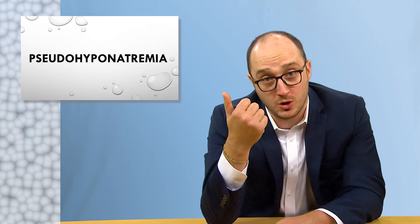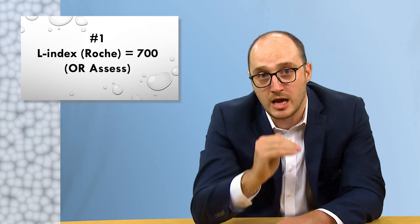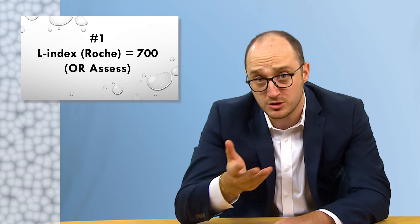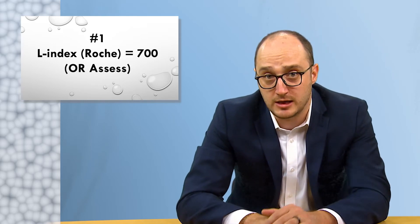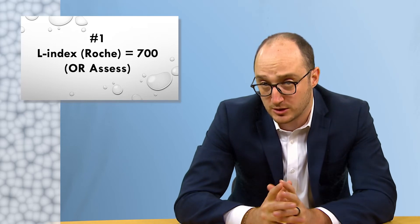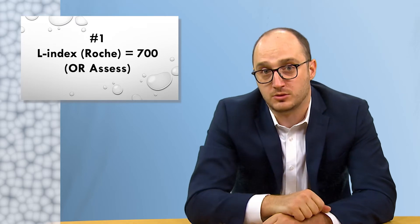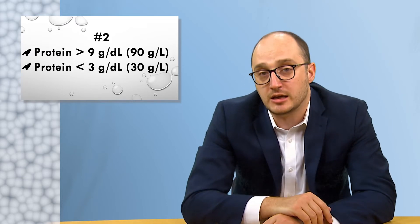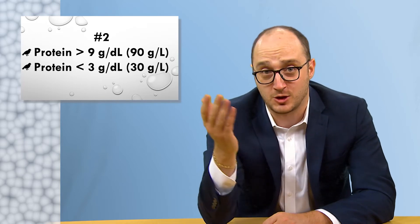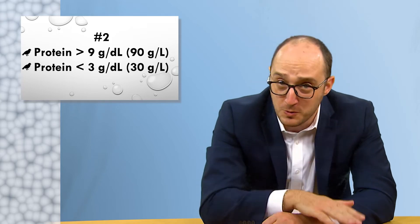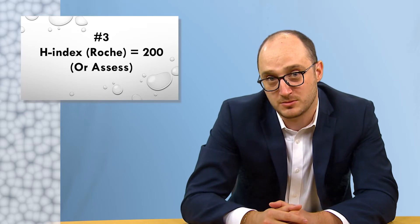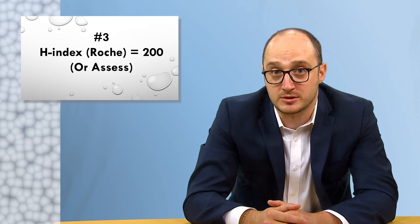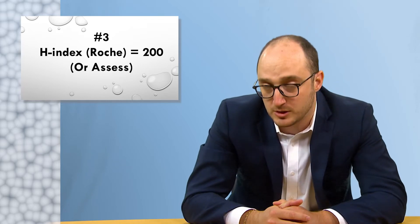If you are a clinical lab, lower your threshold for lipemia interference down to an L-index of 700 on Roche. That may change with larger studies, but with our small data set, this is where we think the threshold should at most be. If you're using another vendor, evaluate that effect using human samples with endogenous lipemia, not intralipid. Lower your threshold for total protein interference for sodium down to at most 9 grams per deciliter. And while we're at it, also set a low threshold of 3 grams per deciliter, because low proteins can cause pseudohyponatremia — that's killing two pseudos with one stone. Lower your threshold for hemolysis to around 200 on Roche. If you're using another vendor, reevaluate the effect of hemolysis using a total allowable error of plus or minus 4 millimoles per liter, not 10 percent.